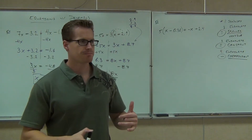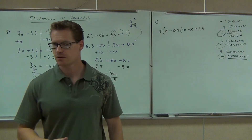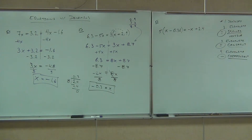Let's go for it. So we're simplifying, then we're getting rid of the smaller variable, isolating the constant term, and then lastly we're dividing. If you want to check with your neighbor right now, that's great. We want to make sure we're all getting it. Help somebody out.